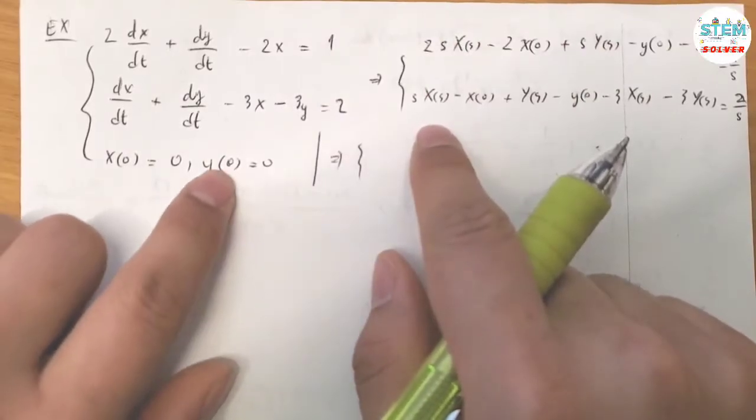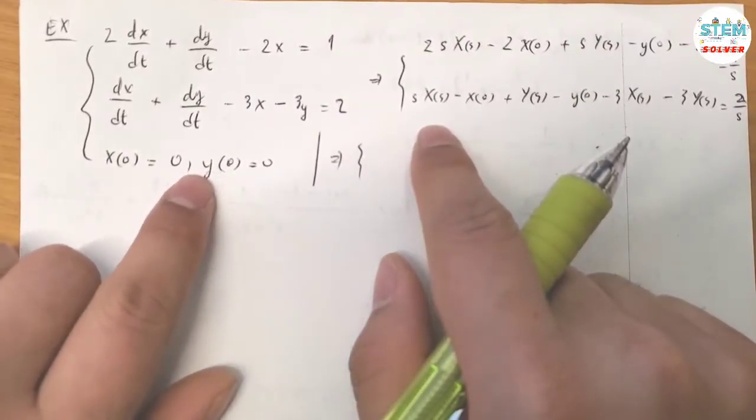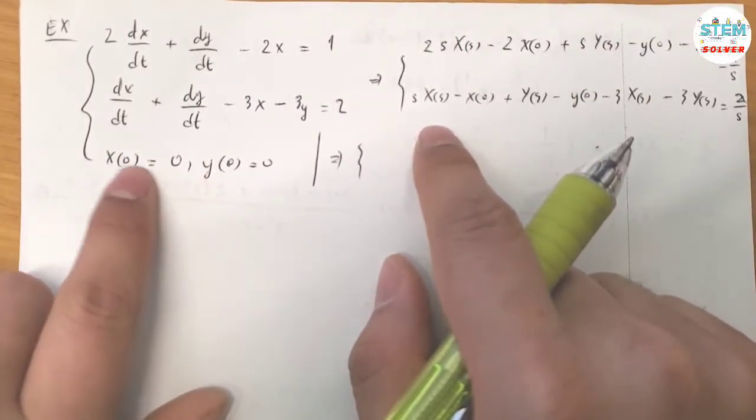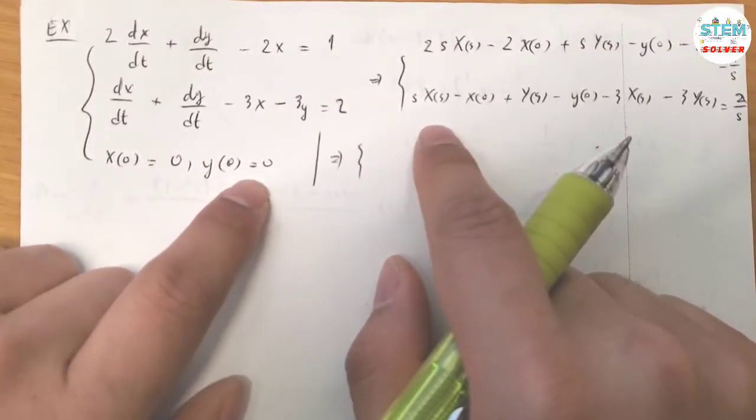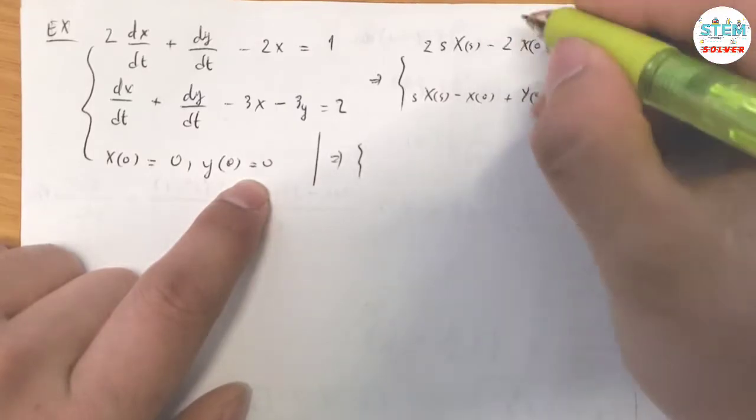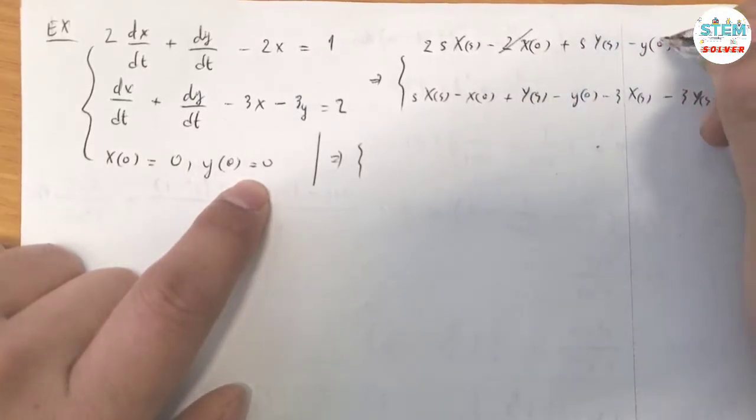Now plug in the initial conditions. Since X(0) equals zero and Y(0) equals zero, all those initial condition terms drop out and are gone.